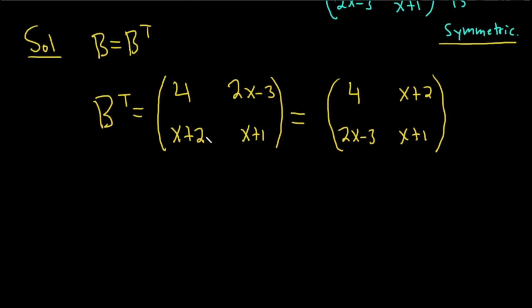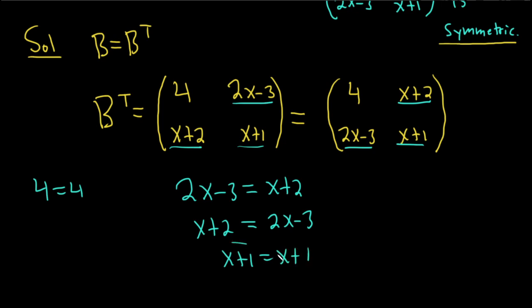So we have 4 equals 4. That is not helpful. 2x-3 equals x+2. Then we have x+2 equals 2x-3. Same thing. And lastly, x+1 equals x+1. So not helpful, not helpful. These are exactly the same. Let's use this one. Or no, let's use this one.